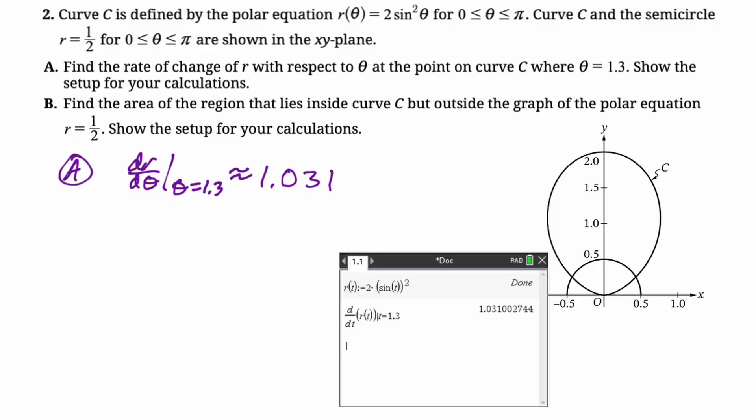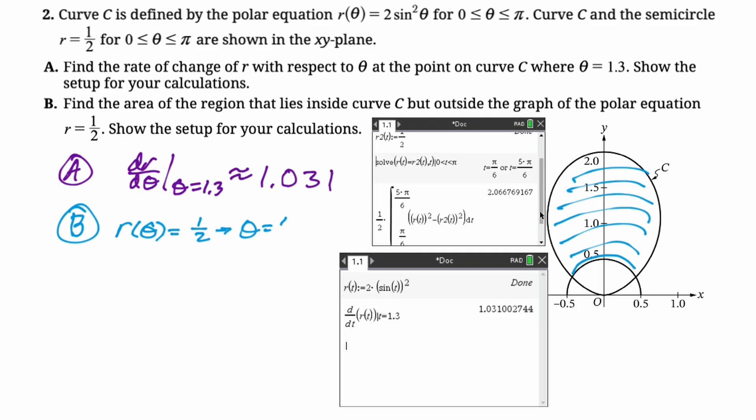So the next part: find the area of the region that lies inside the curve C but outside the graph of the polar equation r equals one half. We need to show the setup for our calculation. So we're going to need to know when these two things intersect, which means we need to figure out on this region where does r of theta equal to one half. So this is a calculator problem. So let's allow the calculator to do it. So I got pi over six and five pi over six by using solve and I limited the domain to make sure that it would only solve on that interval.